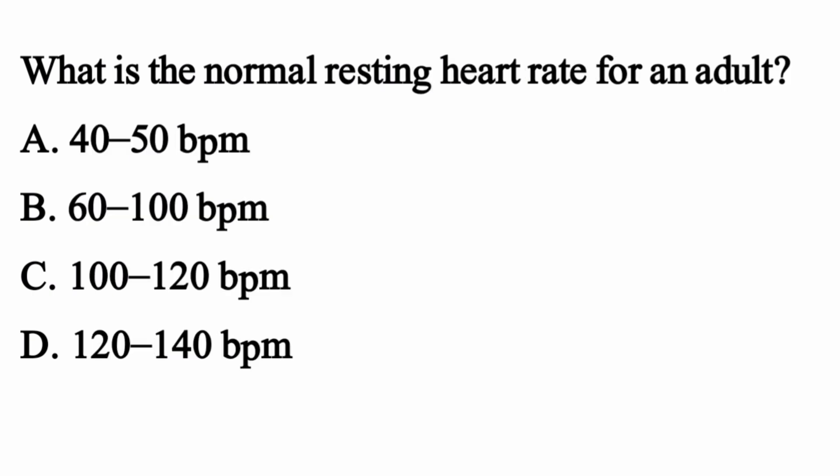What is the normal resting heart rate for an adult? The right option is option B: 60 to 100 BPM.